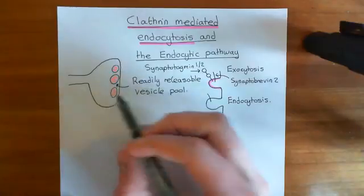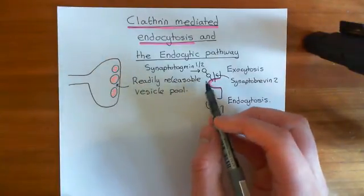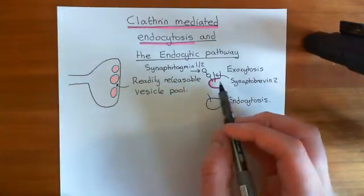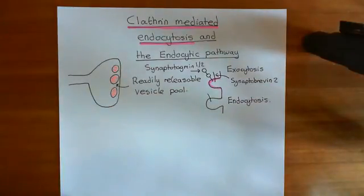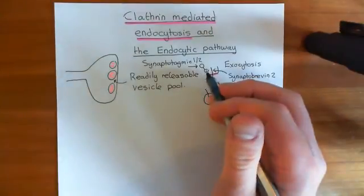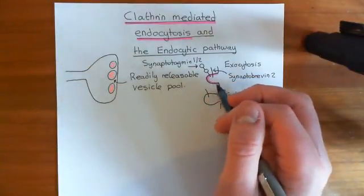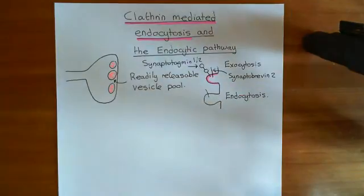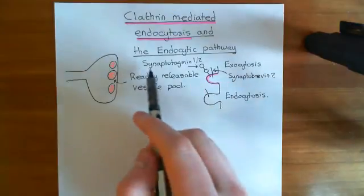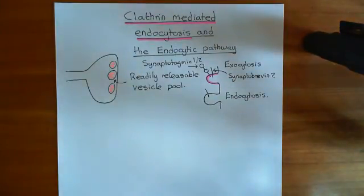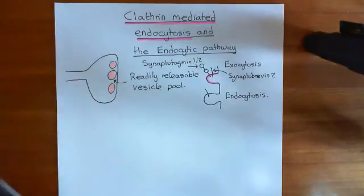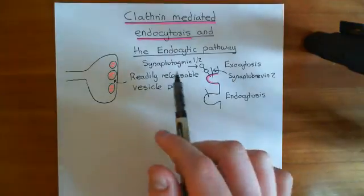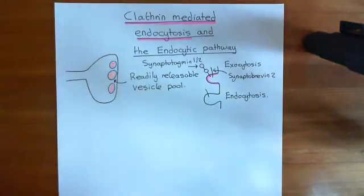When calcium rises in the axon terminal, it activates synaptotagmin-1/2, which then fuses the presynaptic membrane with the synaptic vesicle membrane. Both synaptobrevin-2 and synaptotagmin-1/2 are proteins that end up in the plasma membrane once you've fused the synaptic vesicle membrane with it, so both function as target proteins. There are 19 different isoforms of synaptotagmin; isoforms 1 and 2 are generally involved in synaptic vesicle membrane fusion with the presynaptic membrane.